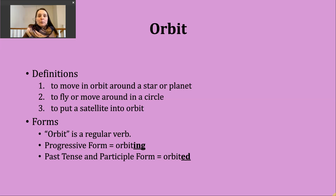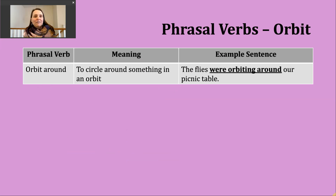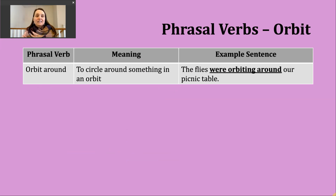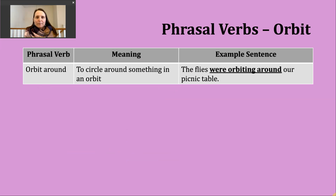Now we're going to look at one phrasal verb you might hear with orbit. It doesn't really change our definition too much, but I wanted to point out you might see orbit around. This implies that circular movement around something. An example might be: the flies were orbiting around our picnic table — you might imagine food out on the table and the flies are circling.